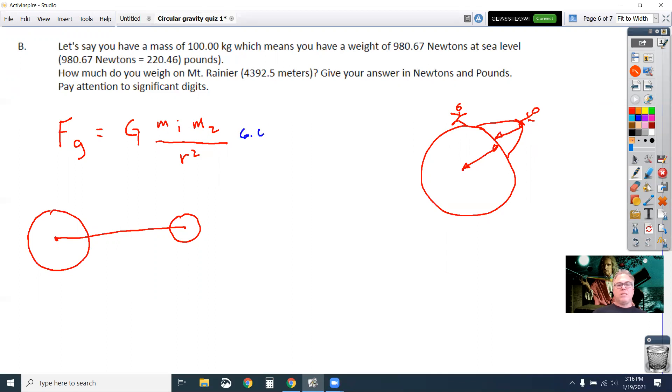So big G, 6.673 times 10 to the minus 11. And then we have the mass of Earth, 5.974 times 10 to the 24th times 100, which is the other mass, which is you. By the way, you likely don't have a mass of 100 kilograms. That would be 221 pounds or so. At any rate, here's the hard part on this problem. The hard part is we have to add together the radius of the Earth plus how high you are. And so the radius of the Earth is 6.378 times 10 to the 6th meters plus 4392.5, which is how high you are on Mount Rainier.